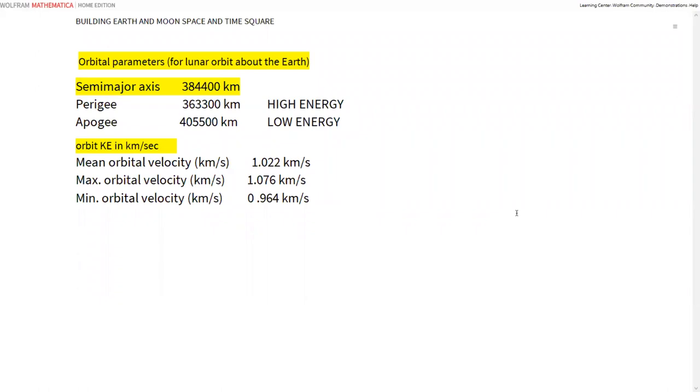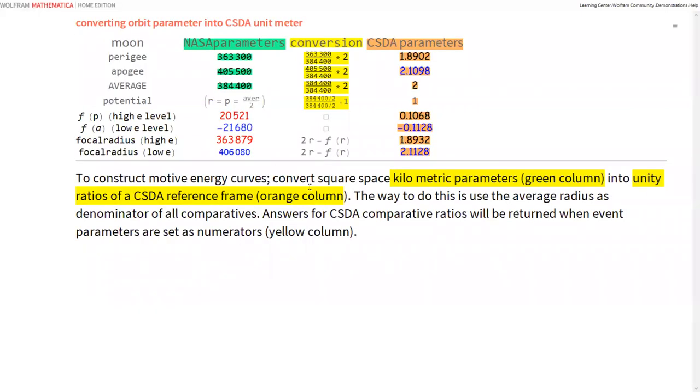I reference orbit curve limits as high energy and low energy. We're going to have to convert the kilometric square space parameters, the green column, into unit numbers for ratios of a CSDA reference frame, the orange column. Take the average radius, 384,400 units, and that's going to be the denominator of all comparatives. On the numerator, we're going to put all the event parameters, and you multiply everything outside the unit circle by 2, and everything on the unit circle and in the unit circle has potential to multiply by 1.